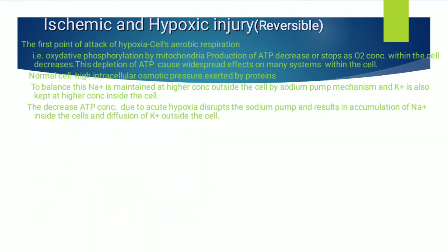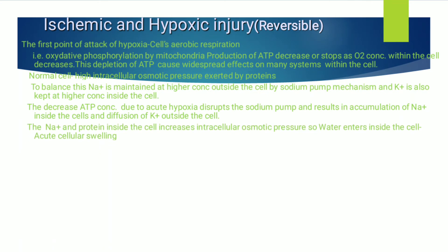Decreased ATP concentration due to acute hypoxia disrupts the sodium pump, resulting in accumulation of sodium inside the cell. Normally sodium is higher outside, but now it will influx inside. Potassium, which is normally higher inside, will efflux outside — causing imbalance. Sodium and protein increase inside the cell, raising intracellular osmotic pressure. Normally osmotic pressure is maintained, but with decreased ATP and oxygen, sodium and protein enter the cell and intracellular osmotic pressure increases, causing water to enter and acute cellular swelling.